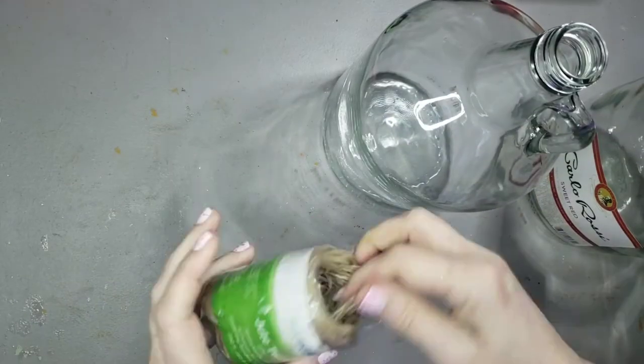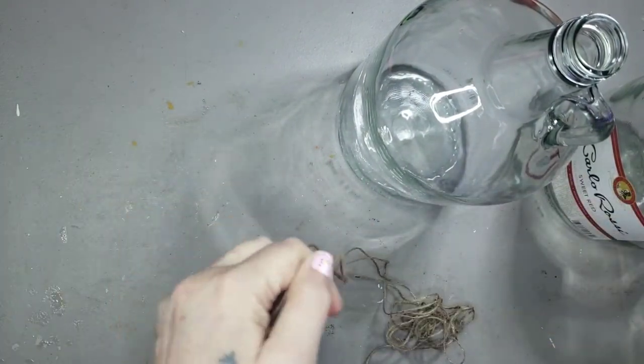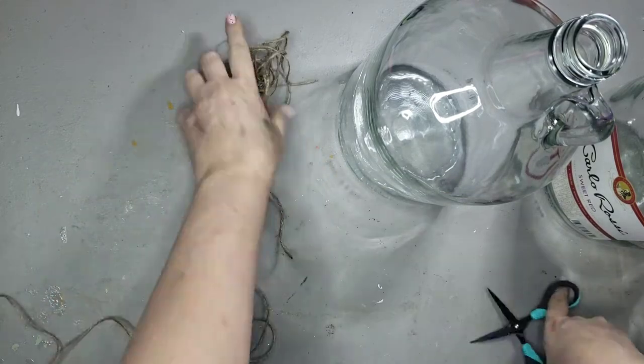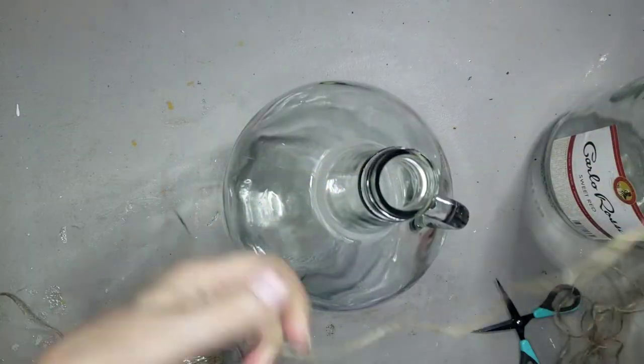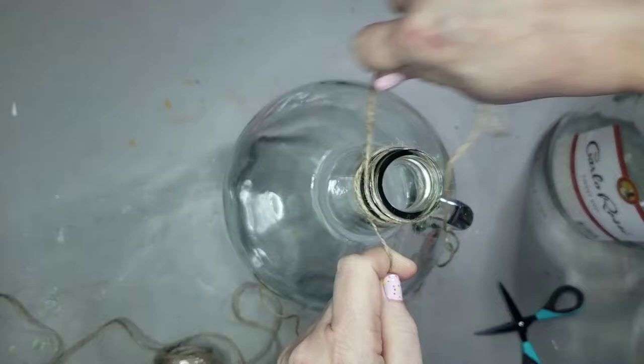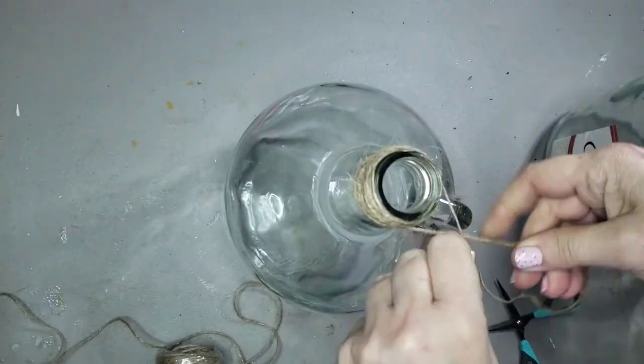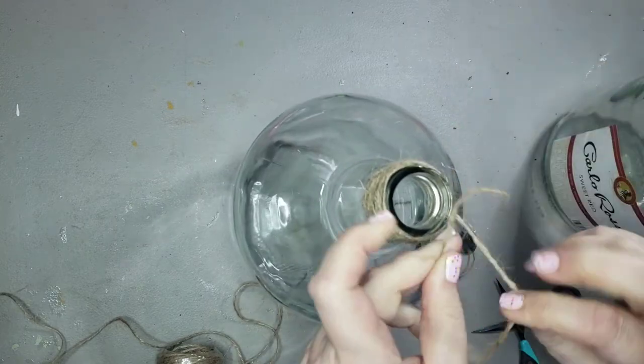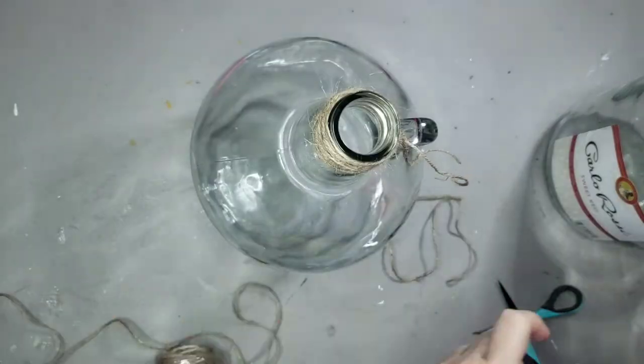Now already this resembles a Demi John jug but I'm just going to decorate it up a bit by adding some twine around the top mainly just on the threads where the cap would go. I'm wrapping it around and around and then I'm going to tie that off and I'm going to leave a little bit of that twine hanging down. I kind of like that little rustic kind of feel.